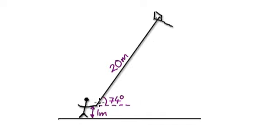So you're flying a kite here. The length of the string is 20 meters. You're holding this string 1 meter above the ground and it makes an angle of 74 degrees. So how do you find out the height of the kite above the ground? Above the ground, meaning this length here. So press pause and have a go.